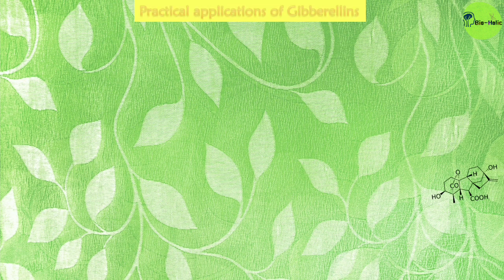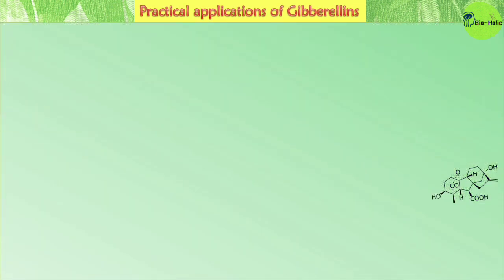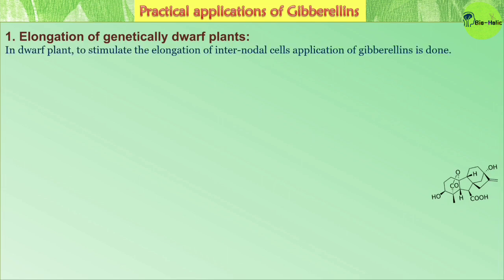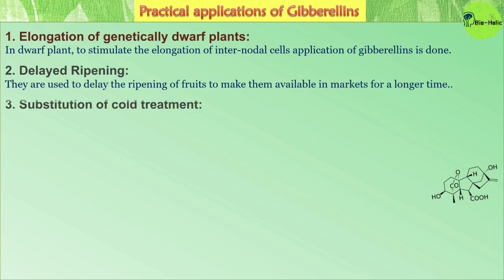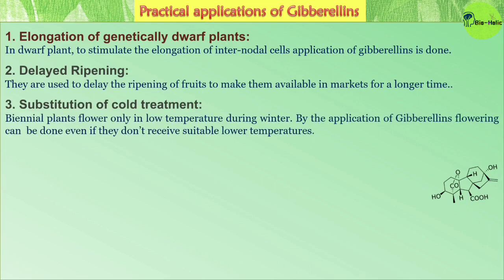Now, moving to the practical applications of gibberellins. First is elongation of genetically dwarf plants — gibberellin application stimulates the elongation of internodal cells. Second is delayed ripening — gibberellins are used to delay the ripening of fruits to make them available in markets for a longer period of time. Third is substitution of cold treatment — biennial plants flower only in low temperatures during winter, but by applying gibberellins, flowering can be induced even without suitable lower temperatures.